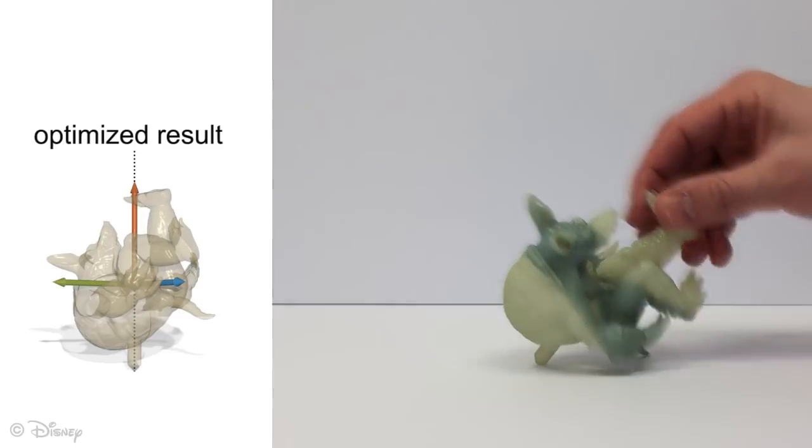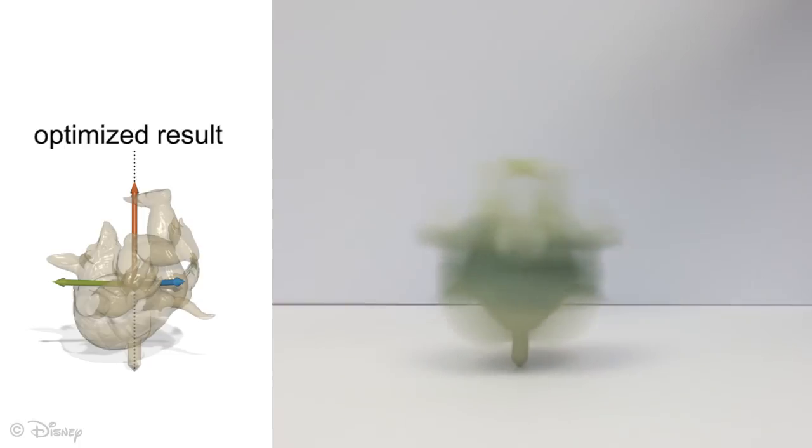The armadillo is an example of a highly asymmetric shape. After our hollowing optimization, the model can do a breakdancing spin on its shell.